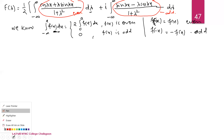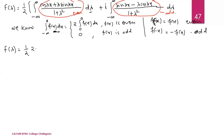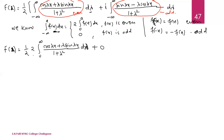So f(x) equals (1/2) times the integral from −∞ to +∞, which for the even function becomes 2 times the integral from 0 to ∞. The 2 cancels with the 1/2, giving: the integral from 0 to ∞ of (cos λx + λ sin λx)/(1 + λ²) dλ = f(x). Writing the right hand side in the left hand side, this is the Fourier integral representation. From equation 1, f(x) = 0 when x is negative and πe^(−x) when x is positive.